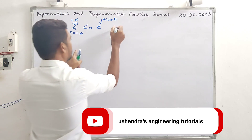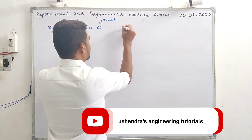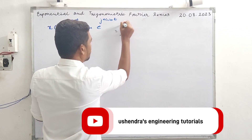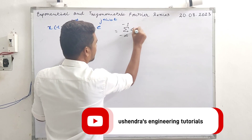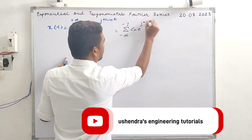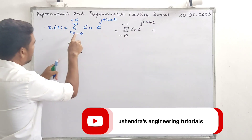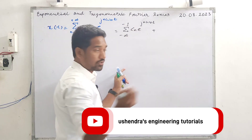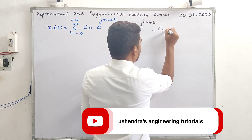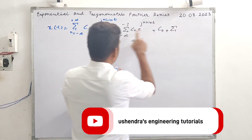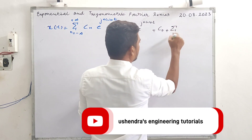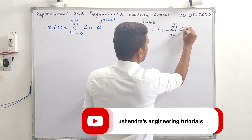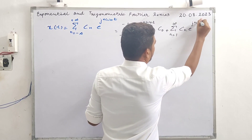We split the summation: from negative infinity to minus 1, we have c_n e raised to j n omega-naught t. In the middle there is the n=0 term, so that is c-naught, plus summation from n equal to 1 to infinity of c_n e raised to j n omega-naught t.